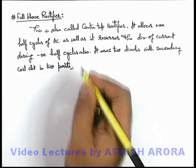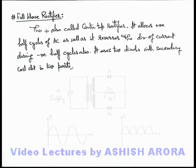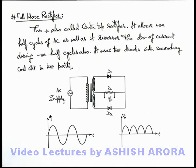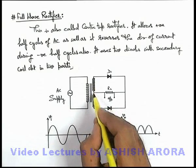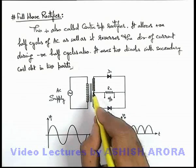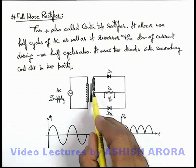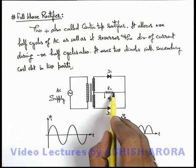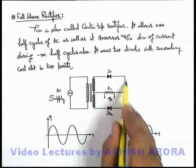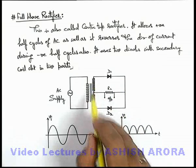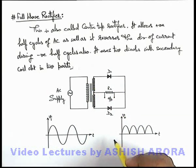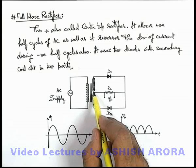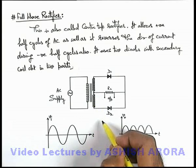Let's discuss the same with the help of the circuit diagram. This is the circuit diagram for a full wave rectifier. Here you can see that the transformer's secondary coil is divided in 2 parts and there is a center tap where we connect a wire, which is connected to the load resistance through 2 diodes connected on the other 2 ends of the secondary coil. Because of this center tapping, this is also called a center tap rectifier.